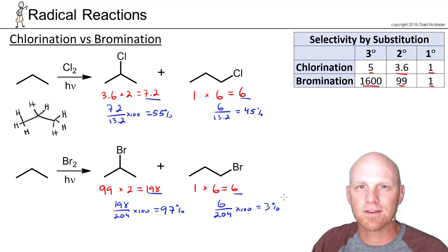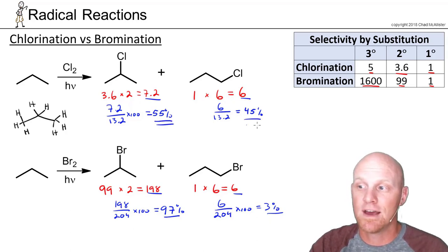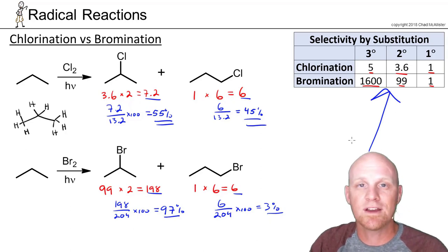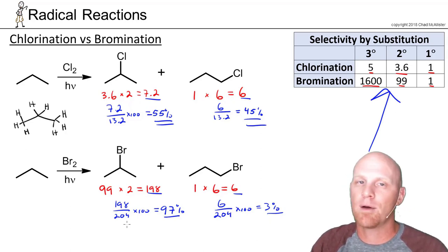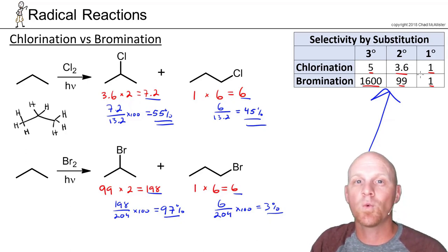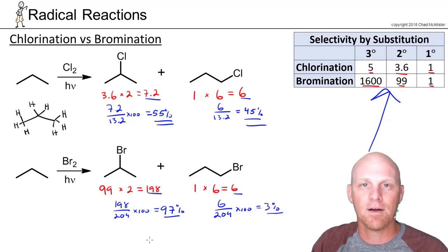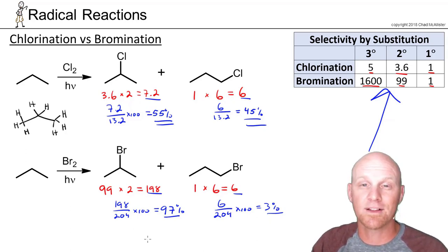Oftentimes, it's not necessary to do a calculation like this for bromination — this is just to show why it's so selective. But for chlorination, you often get a mixture of products, and a professor may ask you to predict and calculate these numbers. They'll give you the chart showing the tertiary to secondary to primary ratio, and you have to determine how many hydrogens lead to each product. Many professors round the 5 to 3.6 to 1 ratio to 5 to 4 to 1 so calculations can be done without a calculator. Some professors skip this entirely, but many classes do cover it.